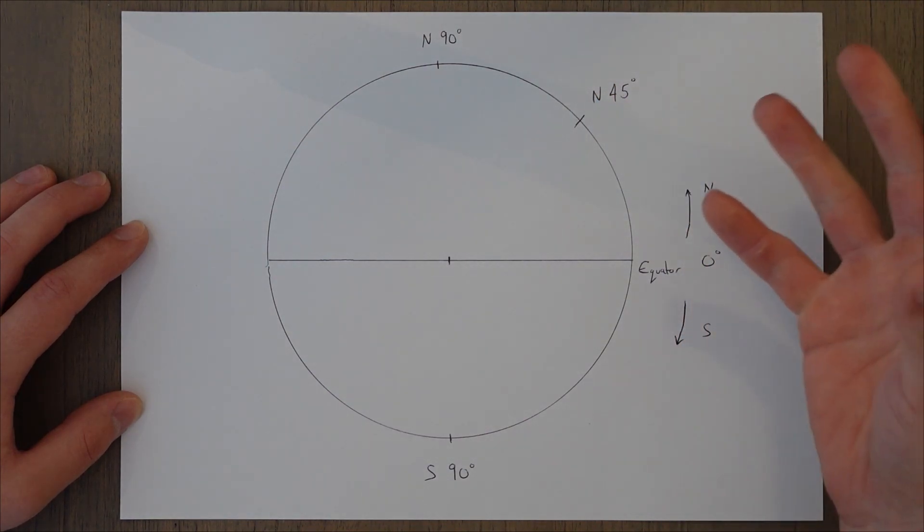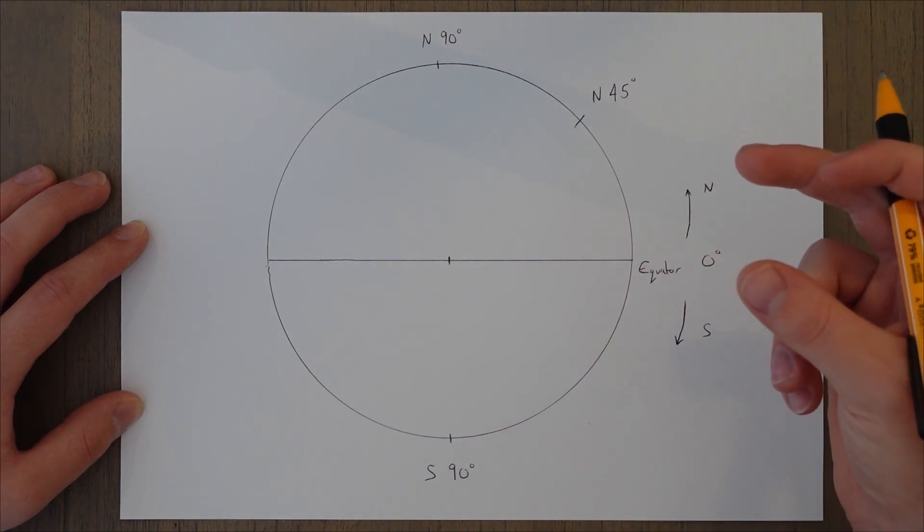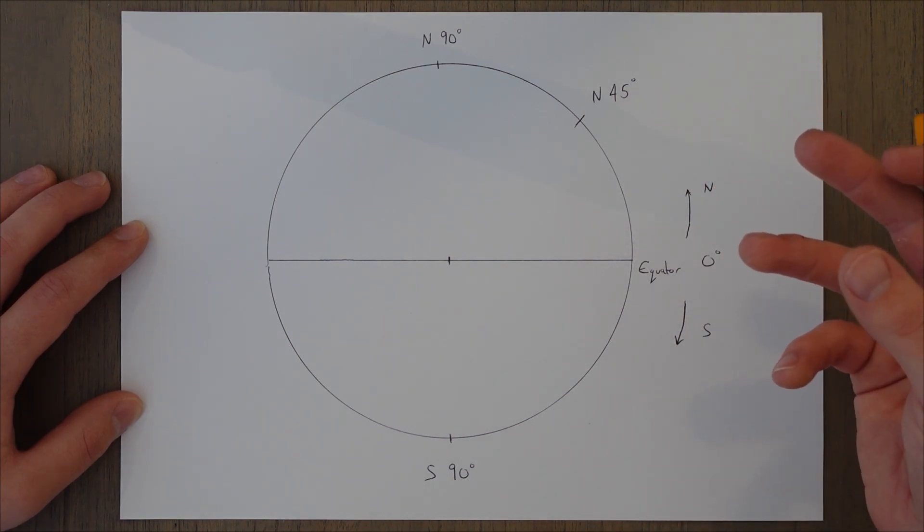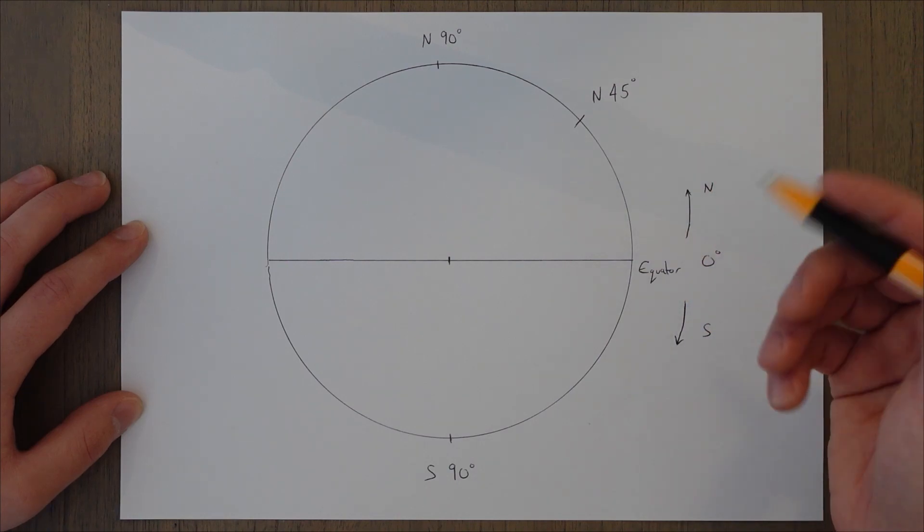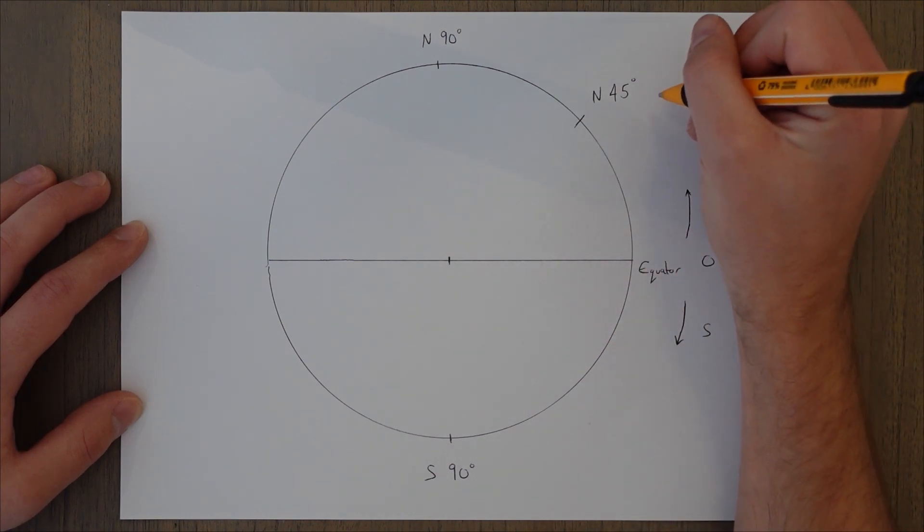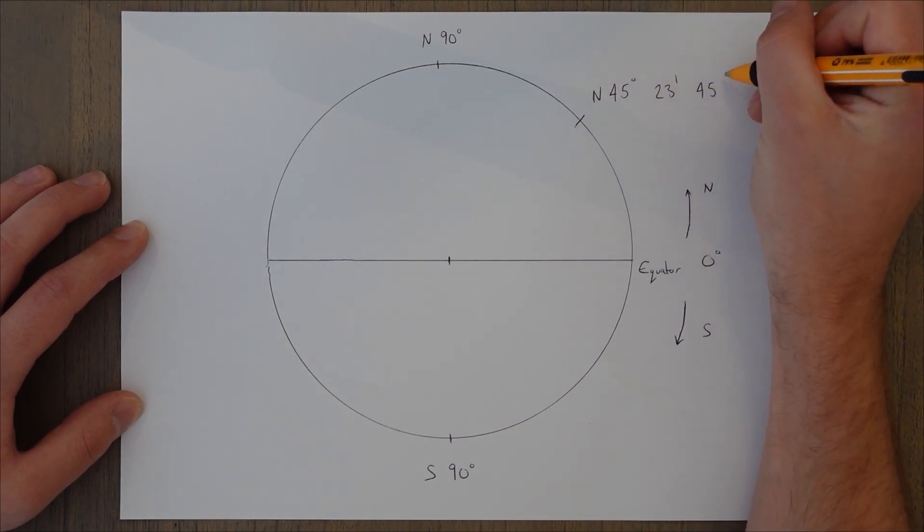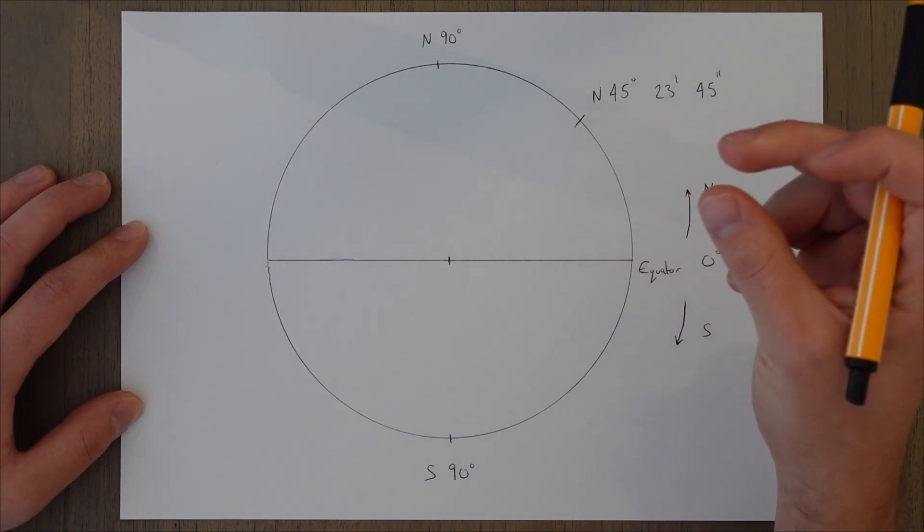We can then split that figure down into a second division for more accuracy and we do this in 60ths of a degree. These are known as minutes, which confusingly has nothing to do with time. It's just because there is 60 and there's 60 minutes in an hour. You can then split it down even further again into seconds. So you would end up with a coordinate that's something like 45 degrees, 23 minutes and 45 seconds. That would be your six-figure latitude reference for ultimate precision.